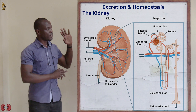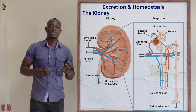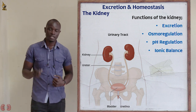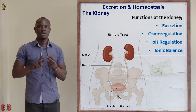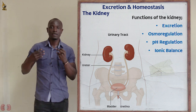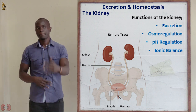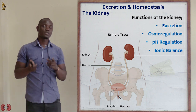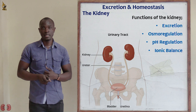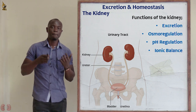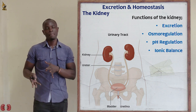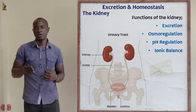To recap the functions of the kidney: first, excretion — through which excess water, excess salt, nitrogenous waste, and urea are removed from the body. Second, osmoregulation — the regulation of water in the body, since osmosis mainly deals with water. Third, pH regulation. Fourth, ionic balance in the body — meaning the regulation of mineral ions such as sodium, calcium, magnesium, chlorine, etc.